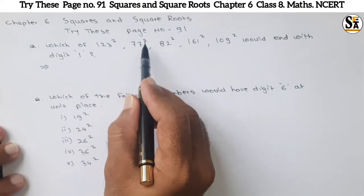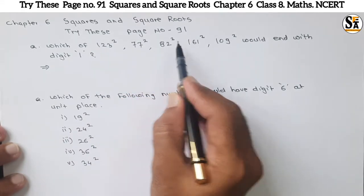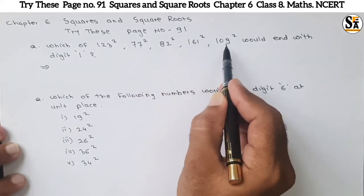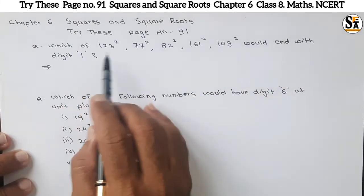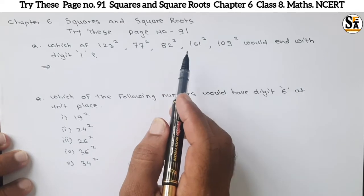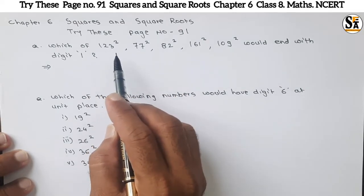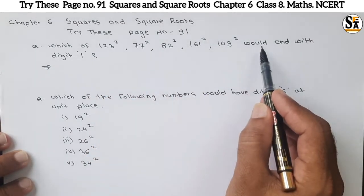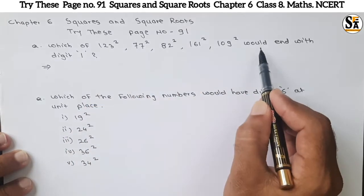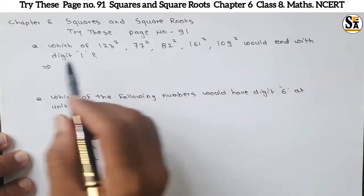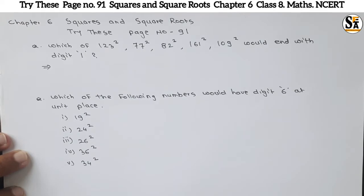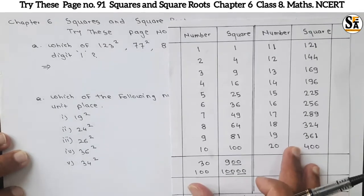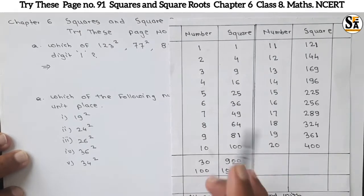See the questions under the 'Try This' section, page number 91. The question is: which of 123², 77², 82², 161², 109² would end with digit number 1? These numbers are given, and we need to find which of their squares would end with the digit 1. We will refer to a chart.